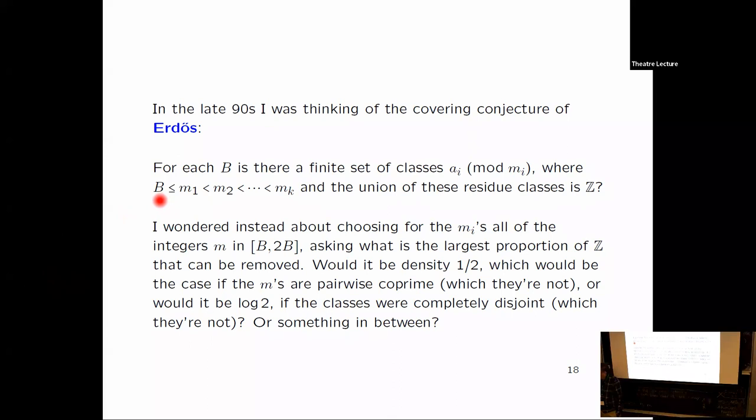If I put in B equal 2, you have to work a little bit to find an example. You can find, for example, 0 mod 2, 0 mod 3, 1 mod 4, 1 mod 6, and 11 mod 12. That works. But as B gets larger, it gets harder and harder to do this. And the record I believe now is B equals 42.